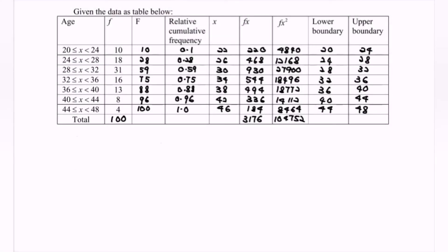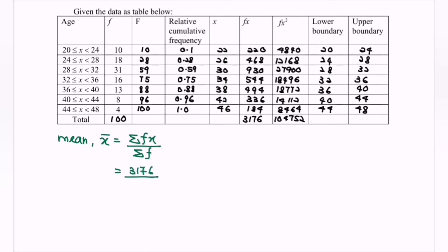So first, what we have to do is find the mean. So the formula for the mean is x-bar, or we can say the summation of fx over the summation of f. Kindly make use of the value where we have 3176 over 100. So the mean will be equal to 31.76, approximately 31.8. So that will be the mean.